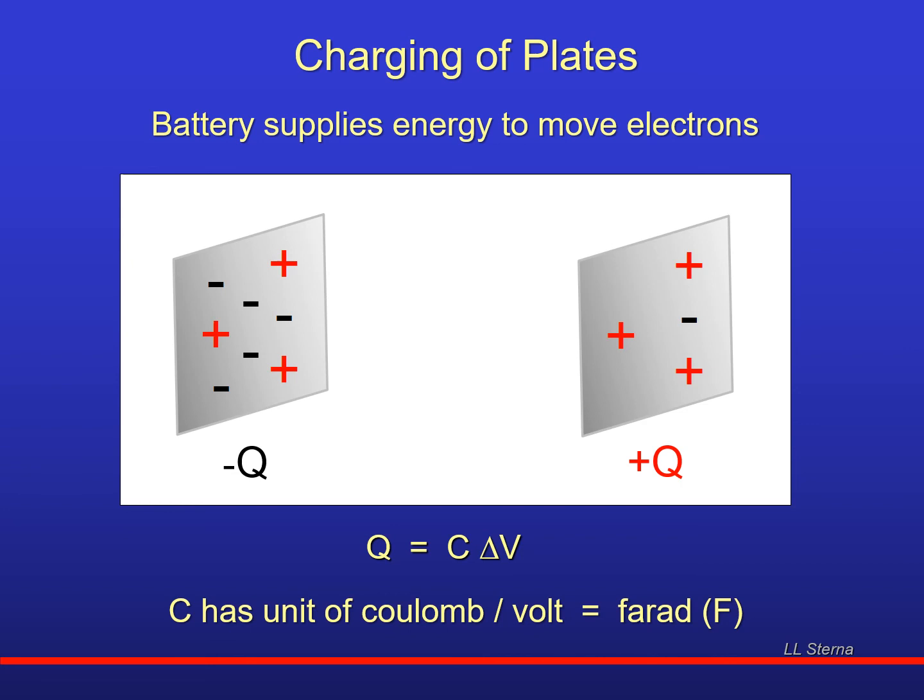Notice that C is going to be charge per volt. So C, which is capacitance, is Coulomb per volt, is called the Farad, capital F. I know we use F for force, we use C for Coulomb, but this is just the way it's designed. In this context, C stands for capacitance, F stands for Farad.